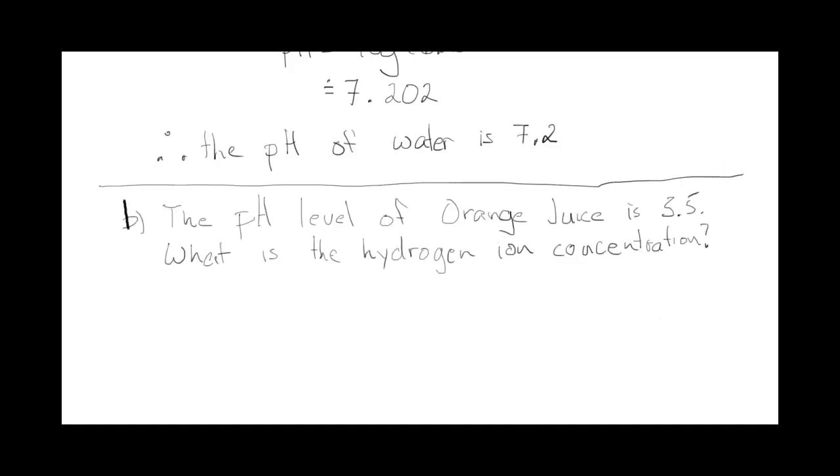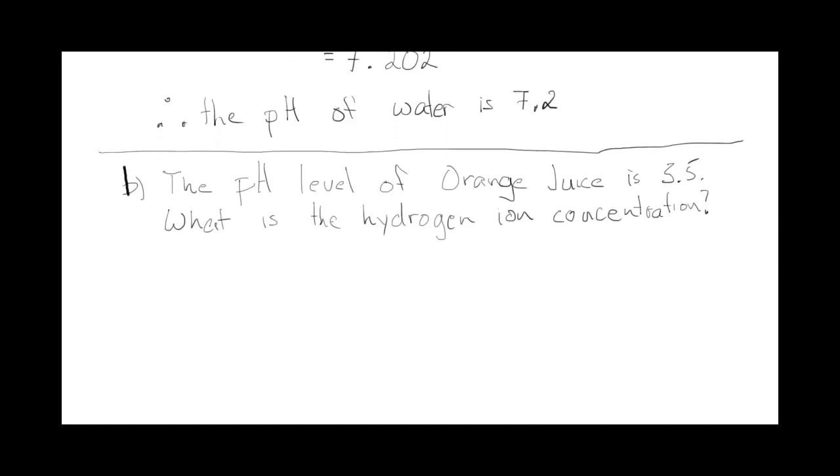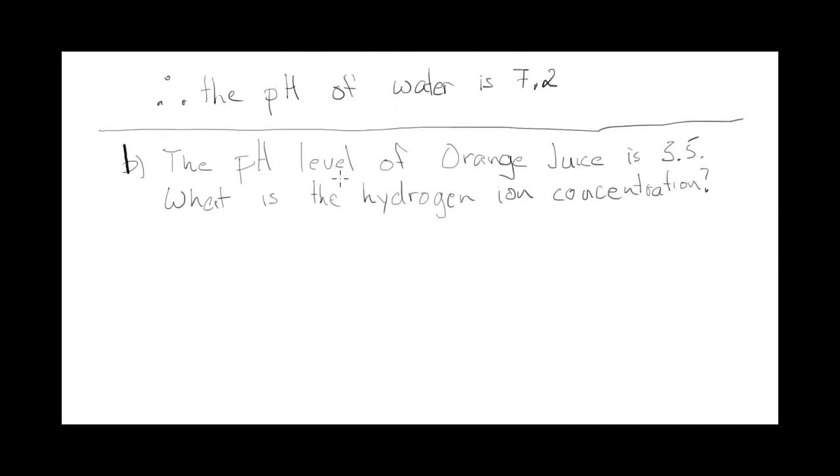Here's a second example, working backwards. Here I'm giving you the pH level of orange juice—I'm telling you that the pH is 3.5 and I want the H value, the hydrogen ion concentration. This pH is much closer to zero meaning it's more acidic, about halfway so you can think of it as twice as acidic on that pH scale.